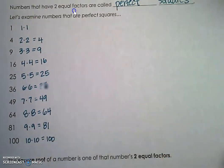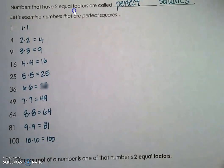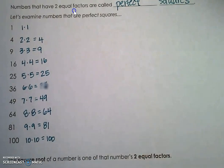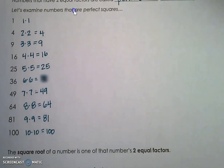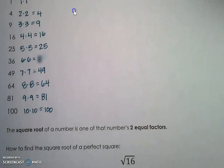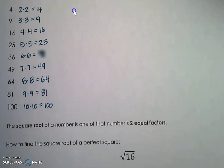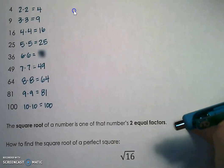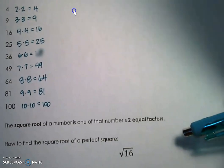So there are just a few perfect squares — there are infinitely many. These are just a few that at the introductory level are good to know as we start moving into how to take the square root of a number. The square root of a number is one of that number's two equal factors.